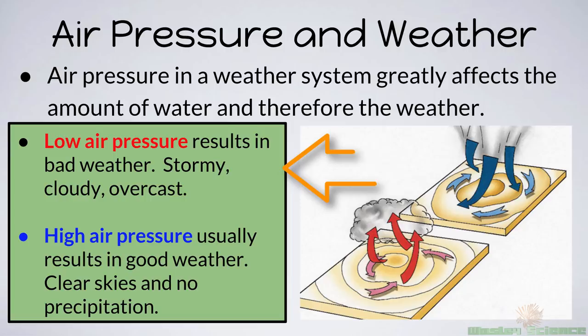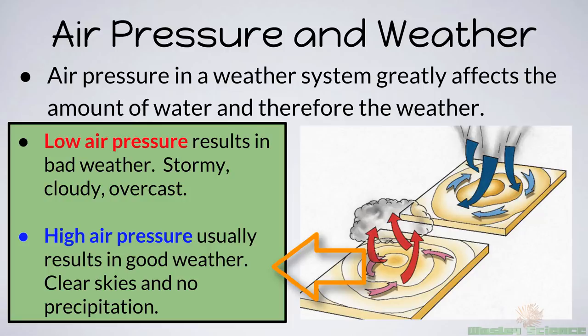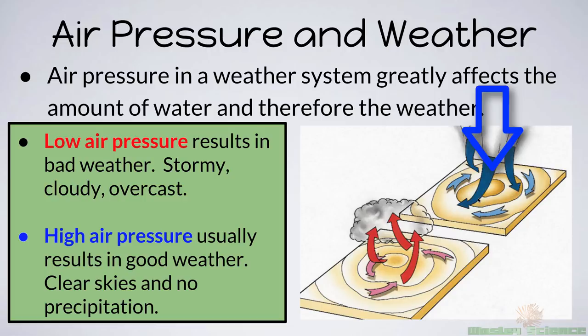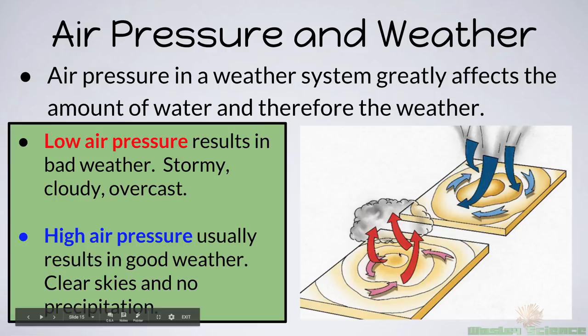When you have low air pressure, this results in generally bad weather — stormy, cloudy, overcast conditions. A high pressure system usually results in good weather: clear skies, no rain, bright sunny day. In a high pressure system, the air is sinking and becoming more dense at the surface, so the air in the sky is not dense — not a lot of clouds. In a low pressure system, there's not a lot of air at the surface, but a lot of air molecules collected in the sky, where clouds form, causing precipitation.